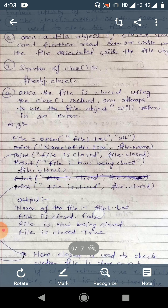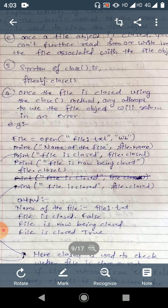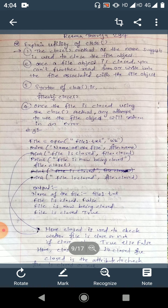File is now being closed, so we display this message. We have a statement file dot close, so after this statement your file is actually closed. Now that's why you are getting output file is closed true.